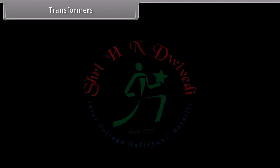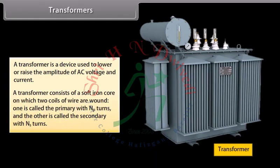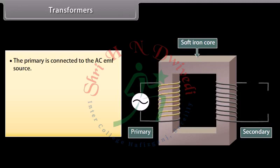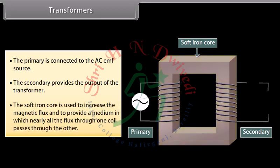A transformer is a device used to lower or raise the amplitude of AC voltage and current. It consists of a soft iron core on which two coils are wound: the primary with NP turns and the secondary with NS turns. The primary is connected to the AC EMF source and the secondary provides the output. The soft iron core increases magnetic flux and ensures nearly all flux through one coil passes through the other, inducing an EMF in both coils.